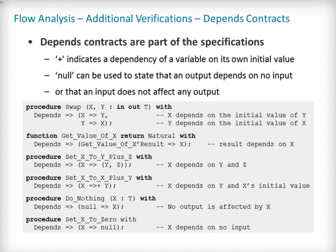Like global contracts, DEPENDS contracts are specified on sub-program declarations using aspects. Its value is a list of one or more dependency relations between outputs and inputs to the program. Each such relation is represented as two lists of variable names separated by an arrow. At the left of the arrow are the variables whose final value depends on the initial value of the variables on the right. For example, the final value of each parameter of the swap sub-program only depends on the initial value of the other parameter. If the sub-program is a function, its result must be listed as an output, as done for GETVALUE_X. It is often the case that the final value of a variable depends on its own initial value. This can be specified concisely using the plus character, like in the specification of set_X_to_X_plus_Y. Note that if there are more than one variable on the left of the arrow, a plus means that each variable depends on itself, not that they all depend on each other.